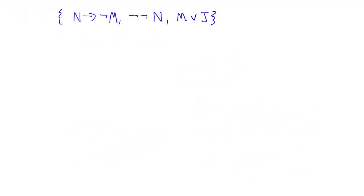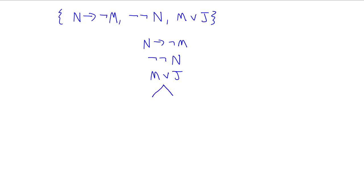Take this set of three statements. Let's check to see if there's a truth value assignment which would make every member of this set true. We list the members of the set vertically — the order doesn't really matter. It also doesn't really matter in which order we decompose them; there are strategies to make trees as efficient as possible, but we won't worry about that right now. We'll just take them from top to bottom. So look at N arrow not M. What has to be true for that to be true? A conditional is true when either the antecedent is false or the consequent is true.